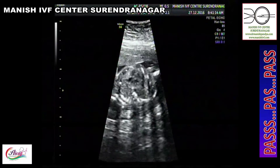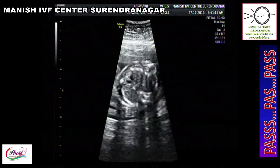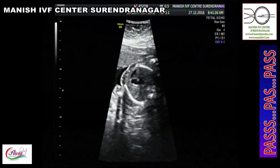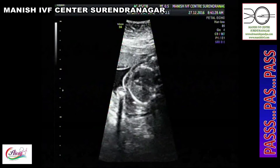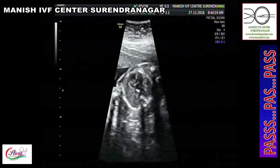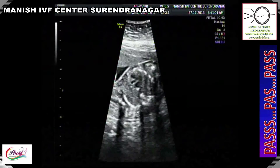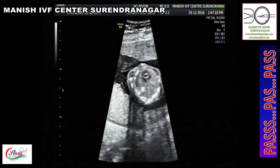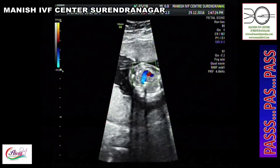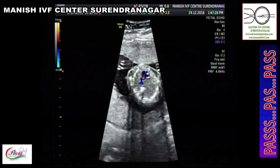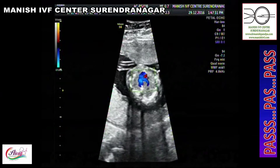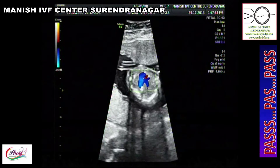From the four-chamber view, move the probe towards the fetal upper mediastinum to see the three-vessel view — pulmonary, aorta, and superior vena cava — arranged as dash, dot, dot, dot. The four-chamber view alone rules out 65% of congenital heart disease, while combined four-chamber and three-vessel view gives a sensitivity of 81% and specificity of 99%. Apply color to see flow in either blue or red in an inverted V shape.